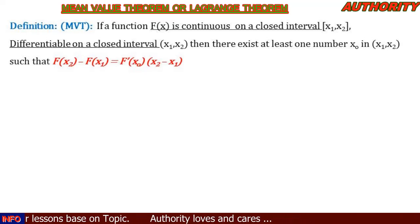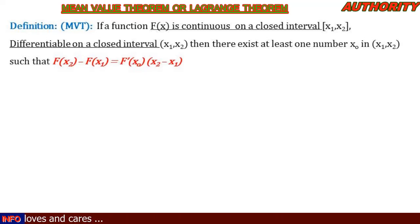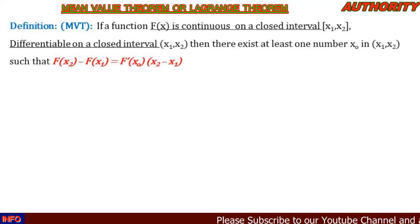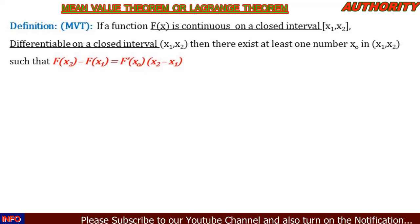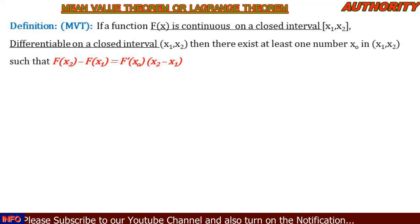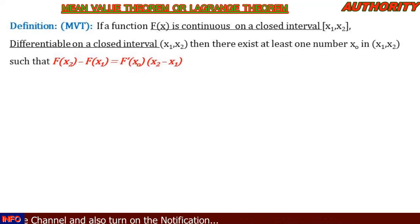Here we have two conditions. The first condition: the function is continuous on a closed interval. The second condition: it is differentiable. And if these two conditions are met, that means there exists at least one number x0 in the interval x1 and x2 such that f(x2) minus f(x1) equals f prime of x0 multiplied by x2 minus x1.